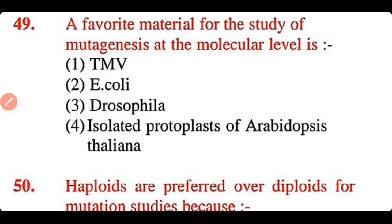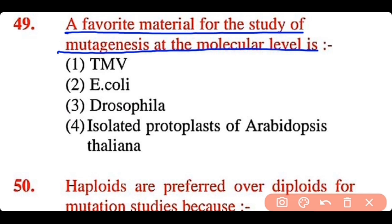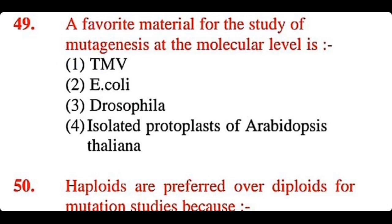Question 49: A favorite material for the study of mutagenesis at the molecular level is: TMV, E. coli, Drosophila, or isolated protoplast of Arabidopsis thaliana. The correct answer is option 2. E. coli is a favorite material for the study of mutagenesis at the molecular level.